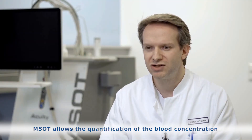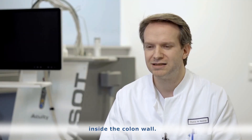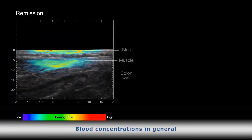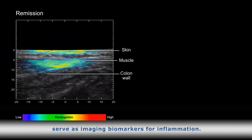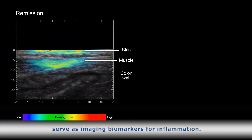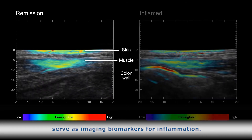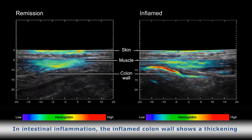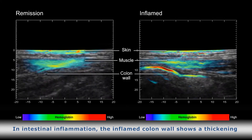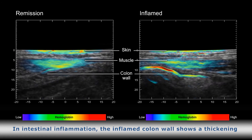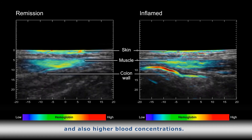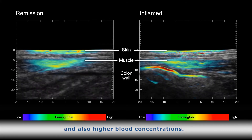MSOT allows the quantification of the blood concentration inside the colon wall. Blood concentrations in general serve as imaging biomarkers for inflammation. In intestinal inflammation, the inflamed colon wall shows a thickening and also higher blood concentrations.